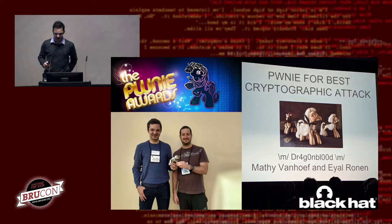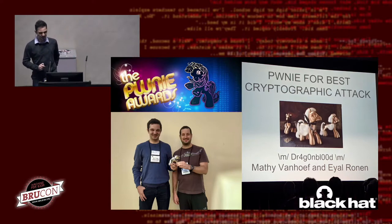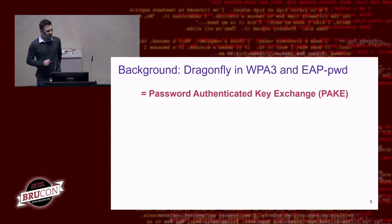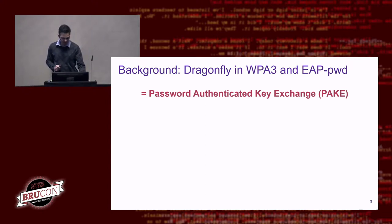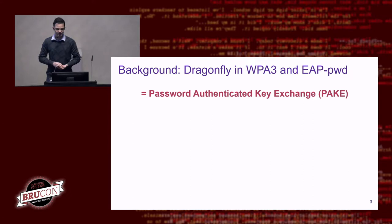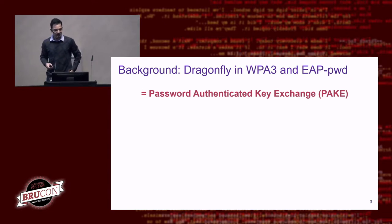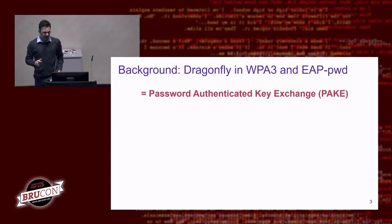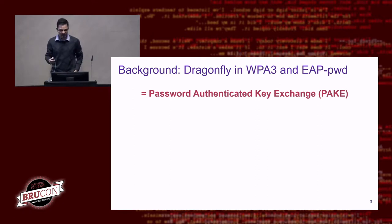Let's introduce the Dragonfly handshake of WPA3. The Dragonfly handshake already existed for a while — it's also used in the EPWD protocol, which is used in enterprise Wi-Fi networks to authenticate users. About 5% of enterprise networks use EPWD, where you log in using a username and password. This Dragonfly handshake used internally in both EPWD and WPA3 is called a PAKE — a Password Authenticated Key Exchange.